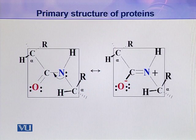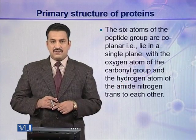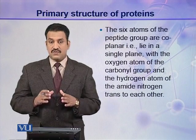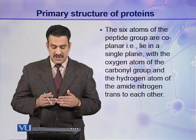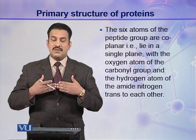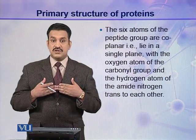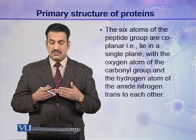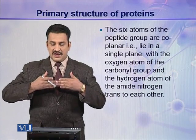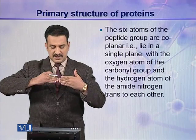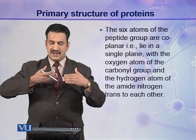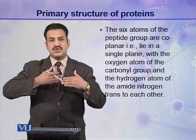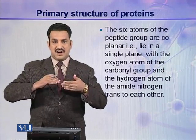The second important finding of Pauling and Corey was that the six atoms of a peptide group are coplanar — they lie in a single plane. A polypeptide or protein contains different peptide groups, and each peptide group has six atoms that lie in a single plane. The next six atoms of the next peptide group lie in another plane, and so on. In this way, the peptide groups are coplanar with each group occupying its own plane.